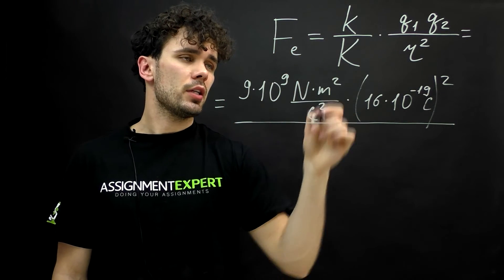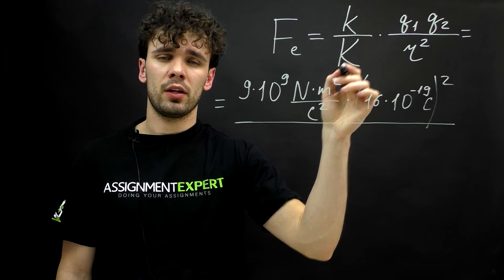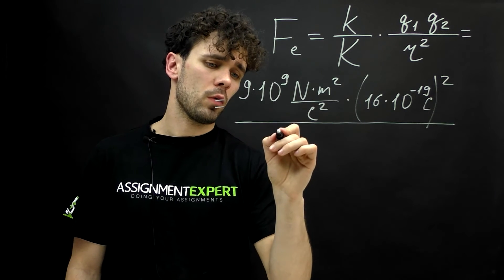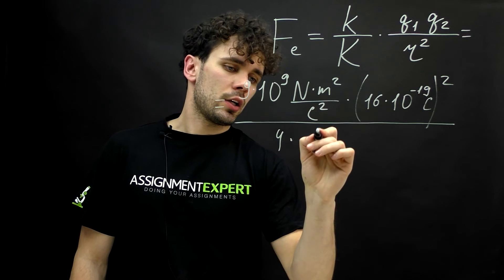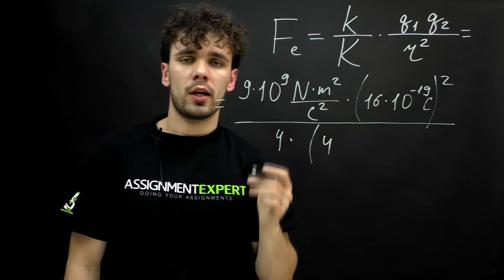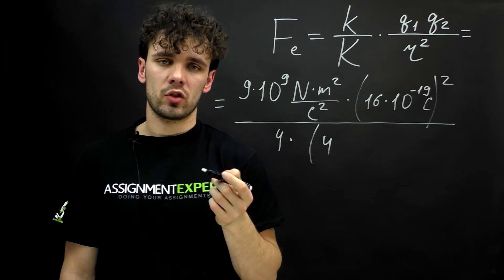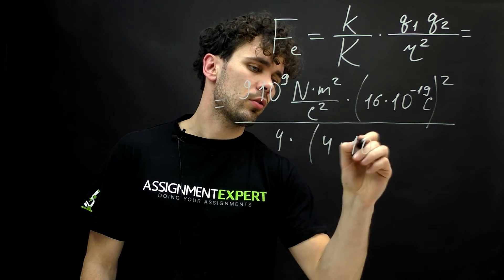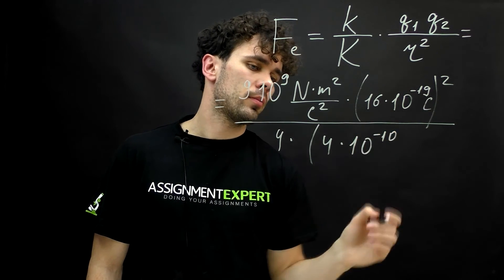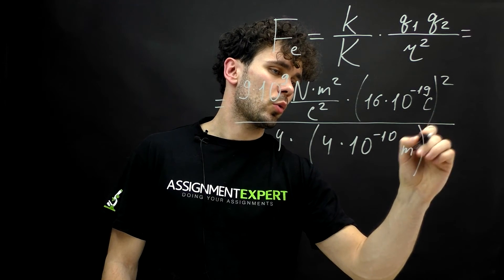And in the denominator we have k, the dielectric constant, which is 4 times the distance between two ions. It is 4. And remember I said 4 angstrom. To turn them into meters we need to add 10 raised to the negative 10th power. 10 raised to the negative 10th power meters squared.